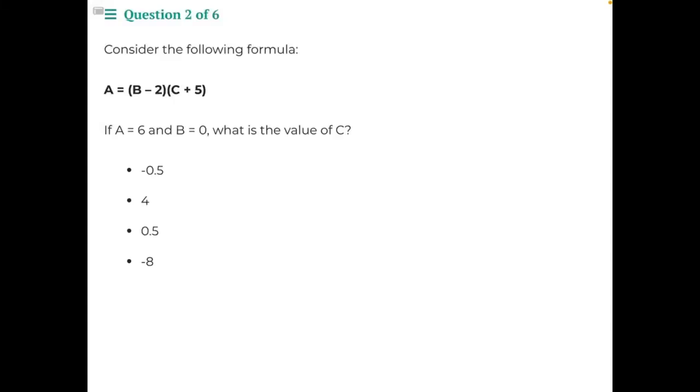Consider the following formula: A equals B minus 2 times C plus 5. If A equals 6 and B equals 0, what is the value of C?